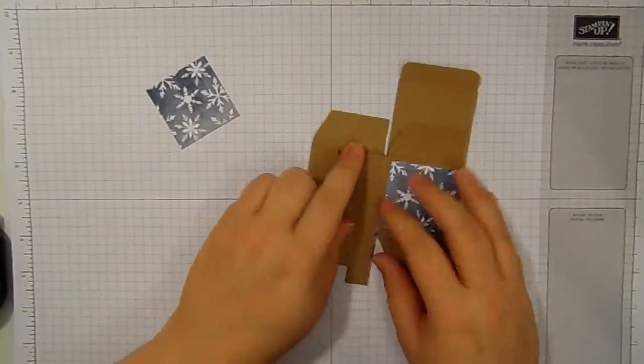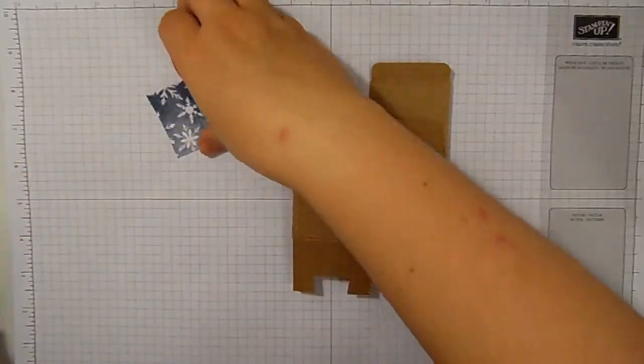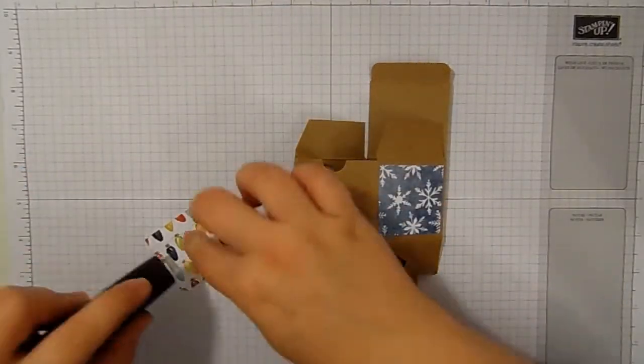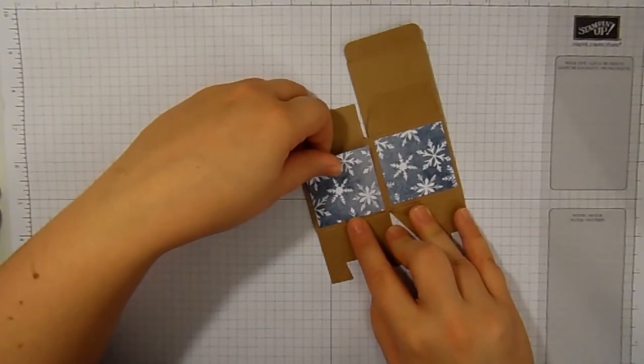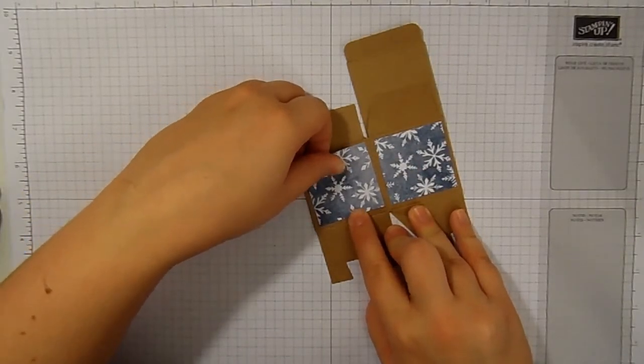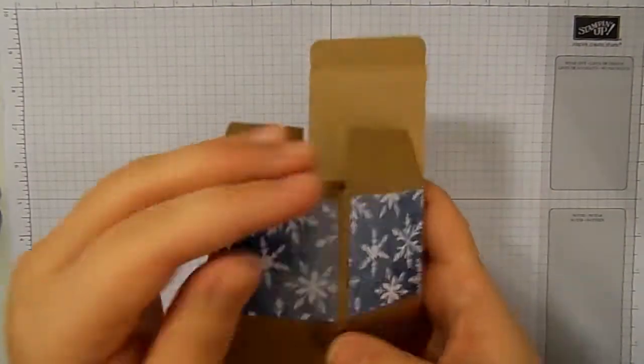And then you will notice the front panel has this little handy little finger hole. What we're going to do is we are going to stick our piece of Designer Series paper over the top. But there is still a bit of a finger hole for you to get your thumb into to open the box.